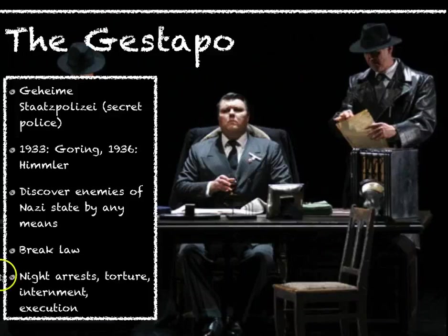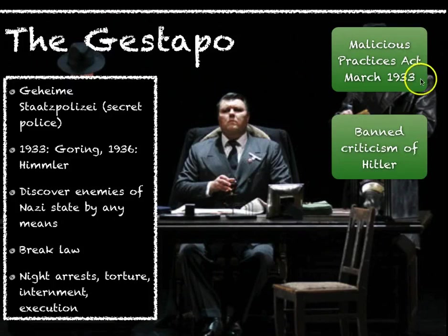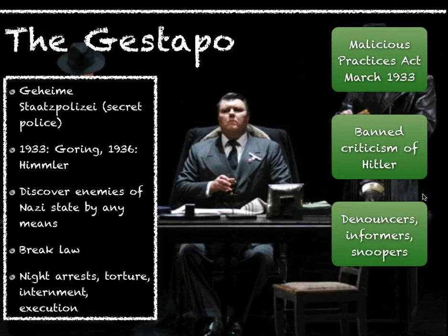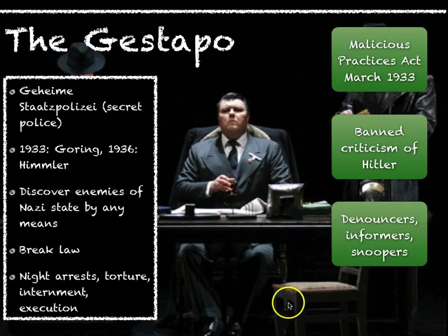Night arrests left people very disoriented. Torture, internment in concentration camps, and even execution were used. Very frequently, prisoners were beaten to death in Gestapo holding cells. The Malicious Practices Act of March 1933 made criticism of Hitler a criminal offence, punishable by imprisonment or even execution. Sinisterly, the Gestapo never actually had massive numbers — in vast areas of rural Germany there may be only one or two members. They relied on ordinary Germans: denouncers, informers, snoopers who would spy on their neighbours and report suspicious activity. There are huge mountains of files collected by the Gestapo from informers in this way.